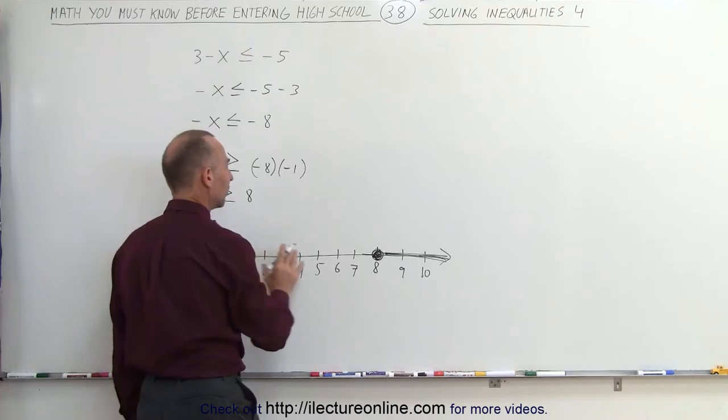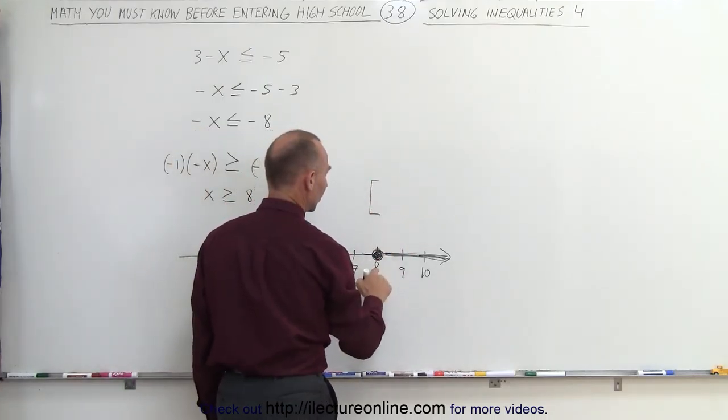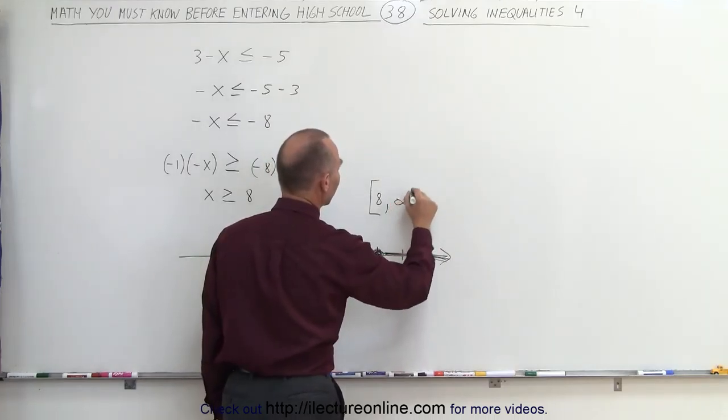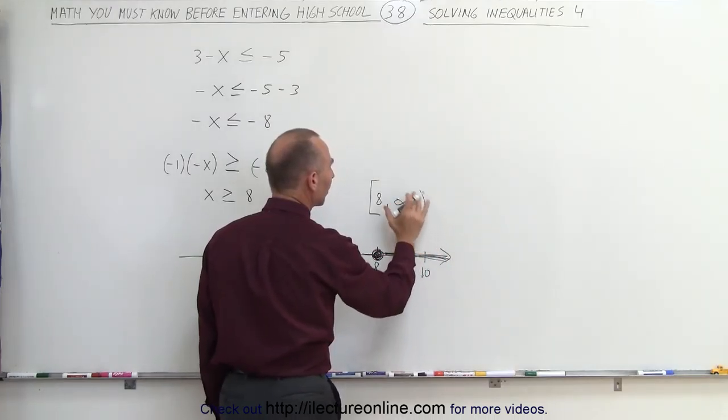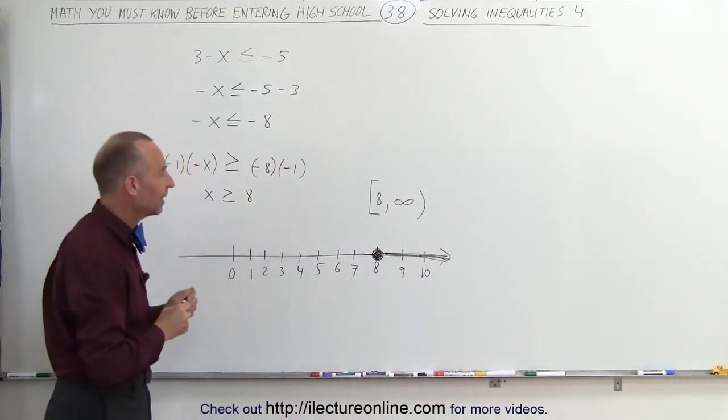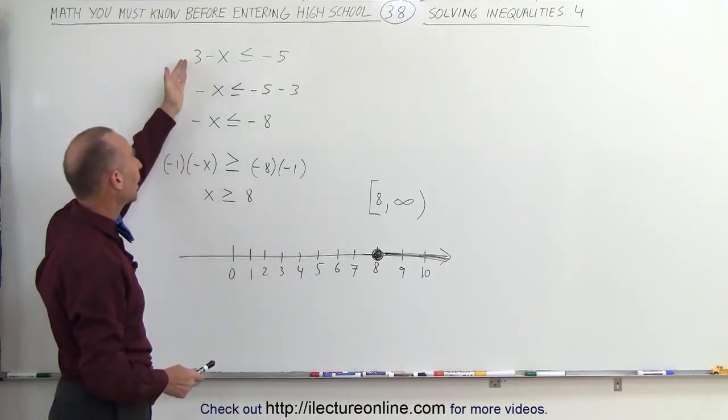If you want to write that as a range, we could say that it starts at 8. We use a bracket because it includes the endpoint 8. And it goes all the way out to infinity on the other side. Put a parenthesis around that because it cannot include infinity since that's an undefined number. And that's how to indicate the solution to this inequality right here.